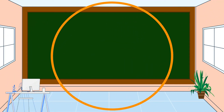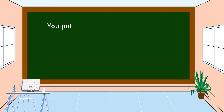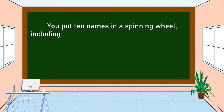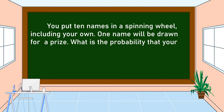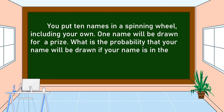This is our second problem. You put 10 names in a spinning wheel, including your own. One name will be drawn for a prize. What is the probability that your name will be drawn if your name is in the spinning wheel only once? To answer this problem, we're going to play with a spinning wheel. Watch and observe how it works.